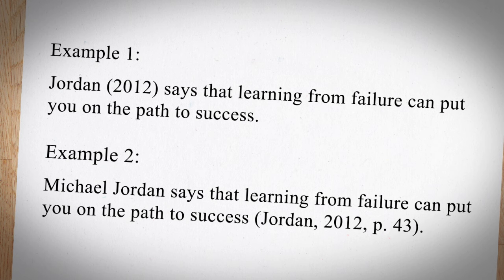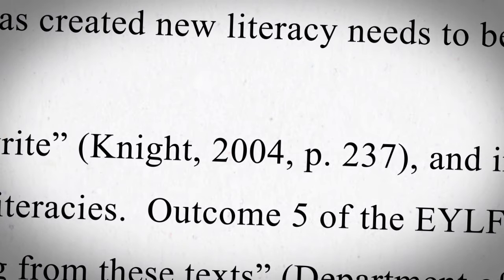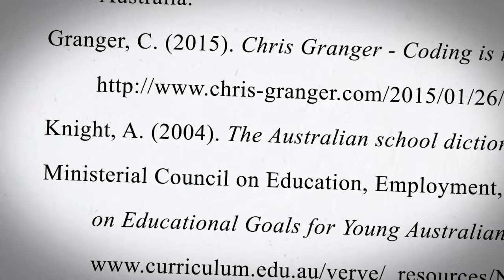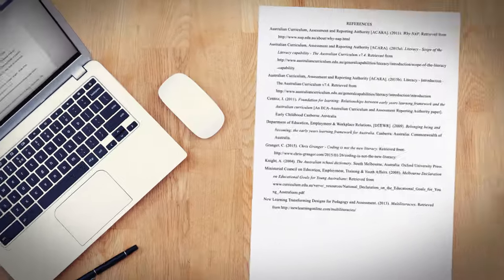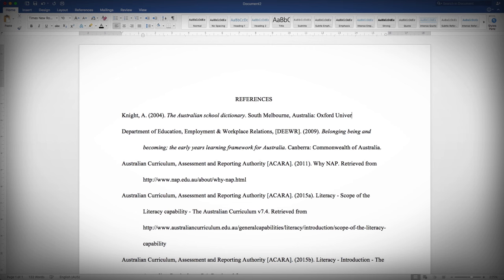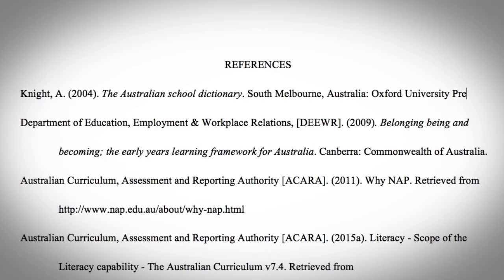When referencing a paraphrase, you can either begin your sentence with the in-text citation or end with it. Regardless of how you use your in-text citation, you still need to follow the same rules as set out by the APA referencing method. Your in-text citations must link to the full entry in the end-of-text reference list at the end of your assessment. A great way to do this is to open a different document and simply add to your reference list each time you write an in-text citation.